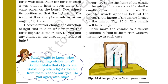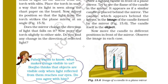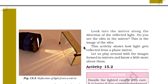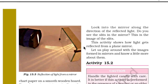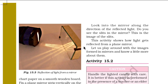Paheli wants to know what makes things visible to us. Bojo thinks that objects are visible only when light reflected from them reaches our eyes. Look into the mirror along the direction of the reflected light. Do you see the slits on the mirror? This is the image of the slits. This activity shows how light gets reflected from a plain mirror.